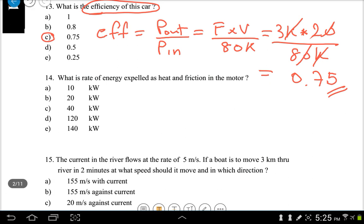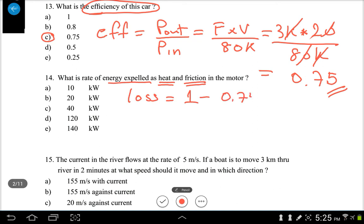The question says what is the rate of energy expelled as heat and friction? Basically they're asking for how much energy lost or how much power is lost in the system. We know the efficiency is 0.75, so the loss will equal to 1 minus the useful. In this case, the loss is 0.25 or one quarter.